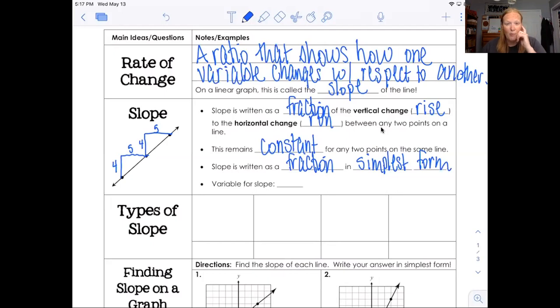So the person who came up with slope was French and his last name started with an M. So the variable that we use for slope is an m.